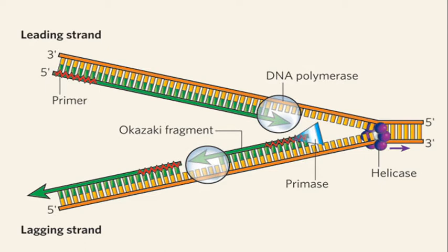Replication starts at the origin of replication with two enzymes. One is the Helicase enzyme, which separates the two strands by breaking the hydrogen bonds between the nitrogenous bases. The other enzyme is Isomerase (Topoisomerase), which unwinds the DNA. These two enzymes act at the origin of replication, and when two strands are separated, a bubble structure forms — this is the replication bubble.